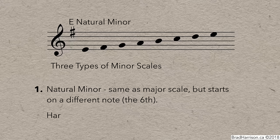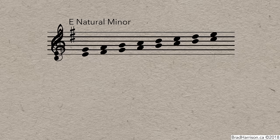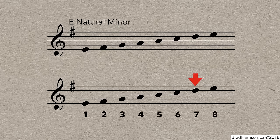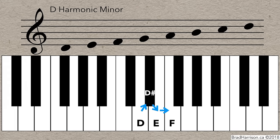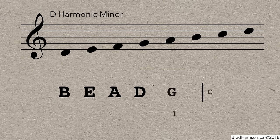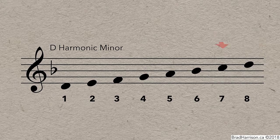The next type is called the harmonic minor scale. It's almost the same as the natural minor, but the seventh note is raised by a semitone. To change E natural minor to E harmonic minor, go to the seventh note, D, and raise it by a semitone to D sharp. To write the D harmonic minor scale: write out the notes, find the relative major — three semitones up from D is F major — and add the key signature, which for F major and D minor is one flat, B flat. Finally, raise the seventh note: C becomes C sharp.